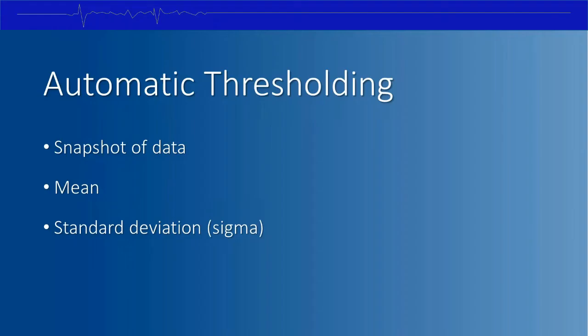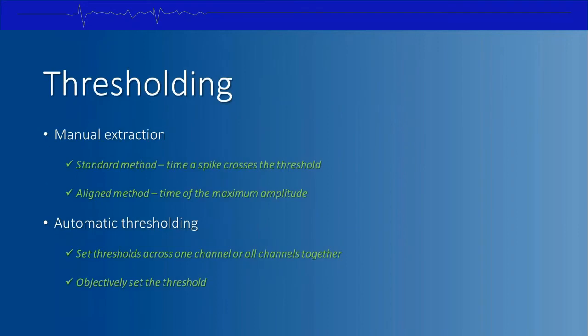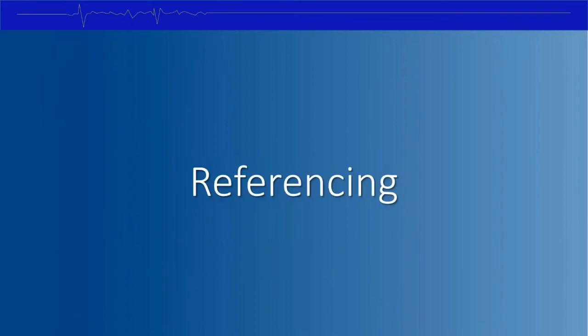To recap thresholding: manual spike extraction has two methods — standard extraction (timestamp at threshold crossing) and aligned extraction (timestamp at maximum amplitude). Automatic thresholding uses a snapshot of continuous data; the threshold is set to a number of standard deviations from the mean. This allows thresholds to be automatically set on one channel or all channels simultaneously, and introduces objectivity to the thresholding process. Next we'll talk about referencing.